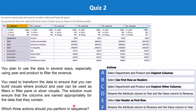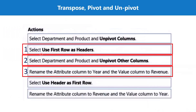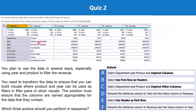The six options are: select department and product and unpivot columns; select 'Use first row as headers'; select department and product and unpivot other columns; rename the attribute column to Year and the value column to Revenue; select 'Use header as first row'; rename the attribute column to Revenue and the value column to Year. The answer is: first, select 'Use first row as headers'; second, select department and product and unpivot other columns; third, rename the attribute column to Year and the value column to Revenue.